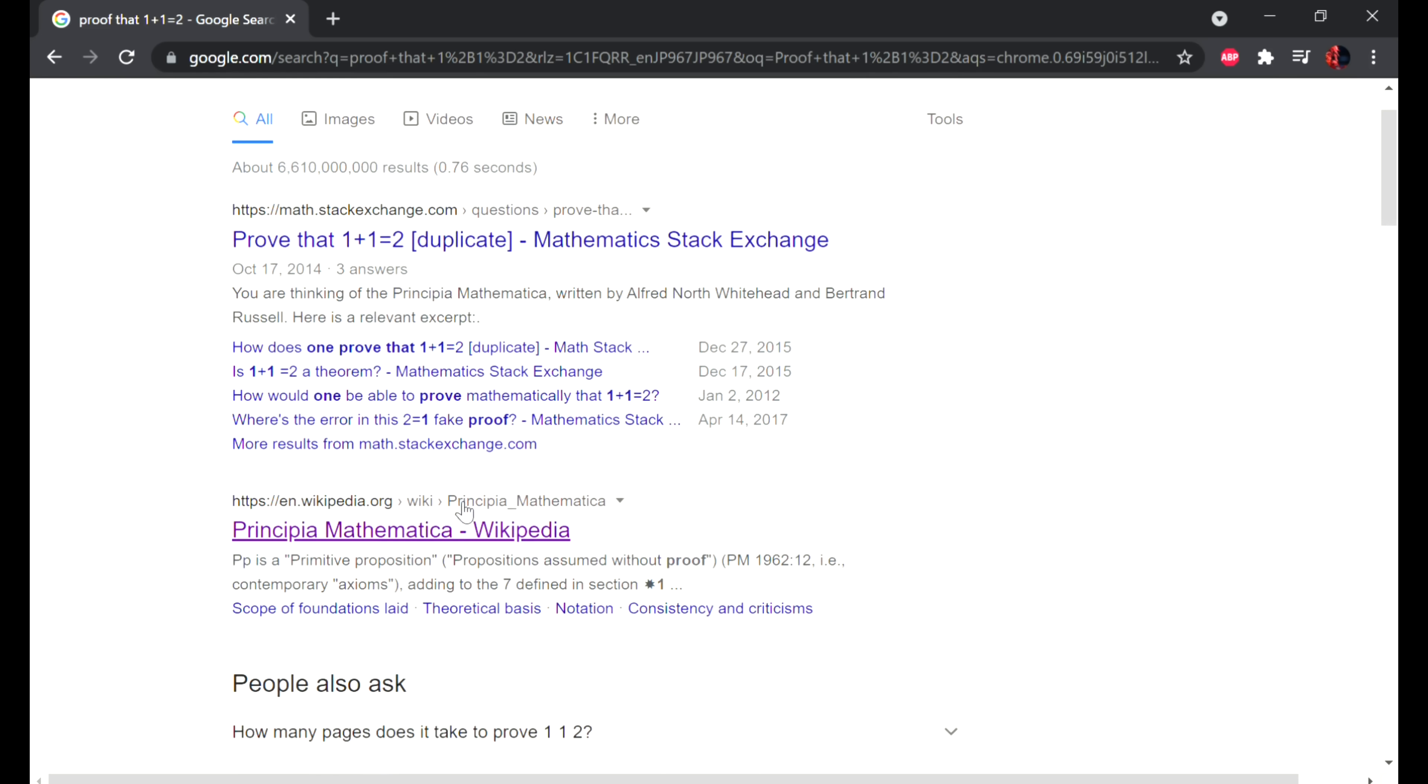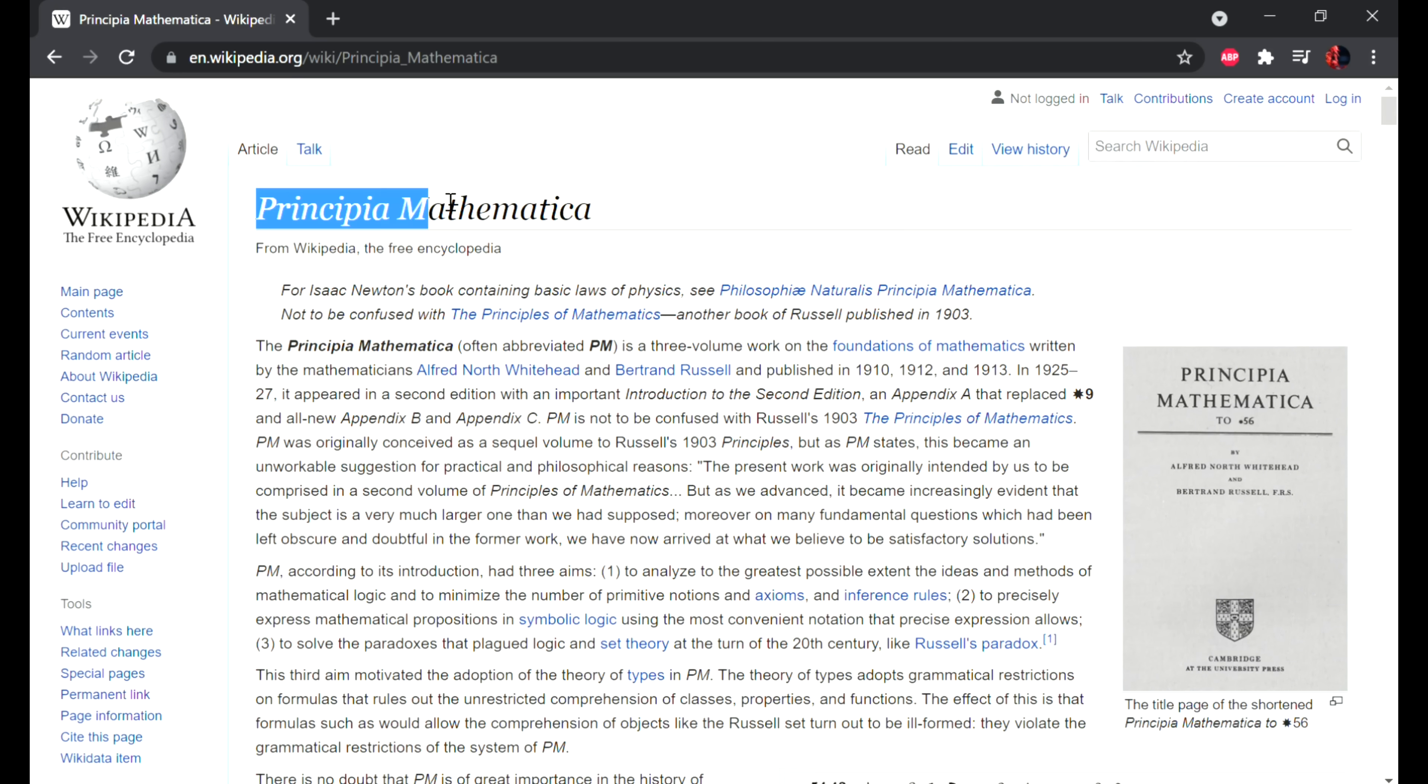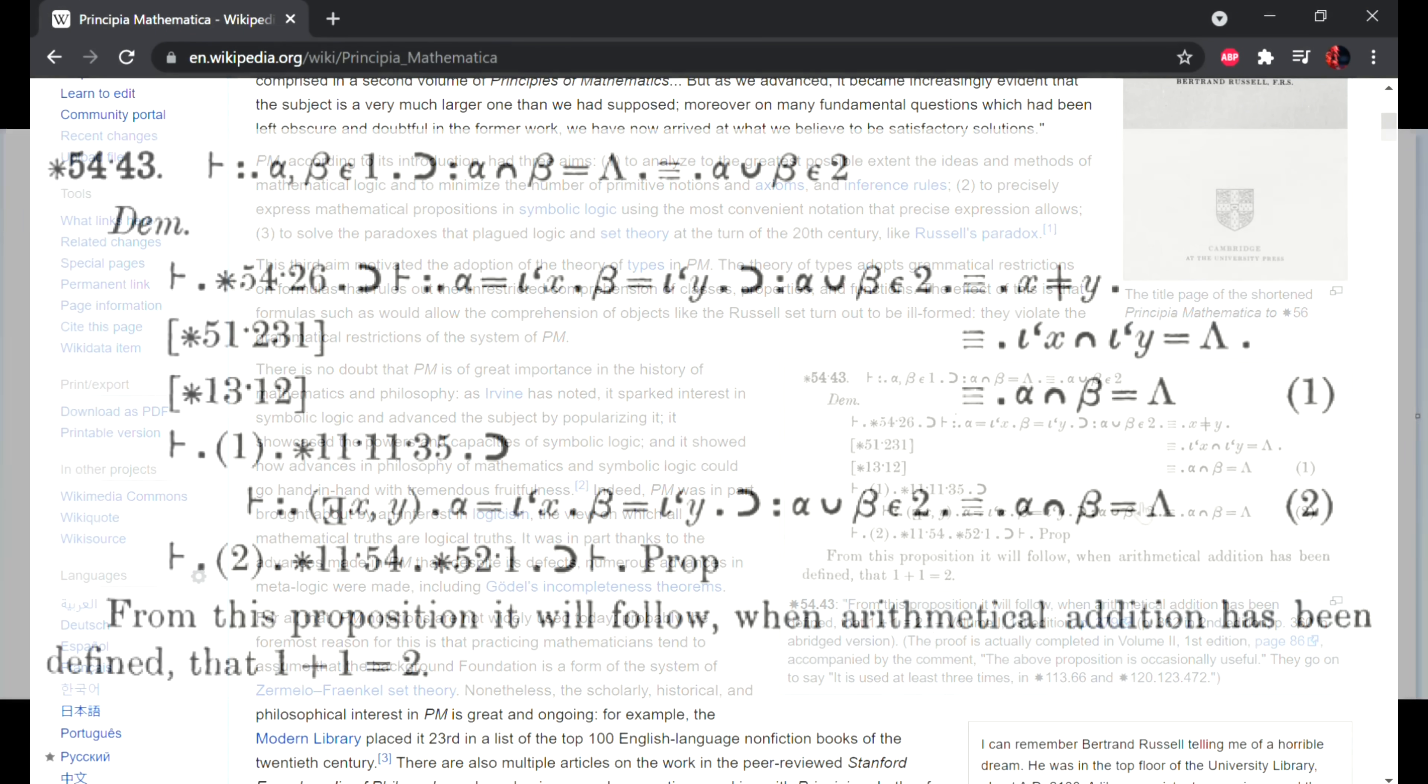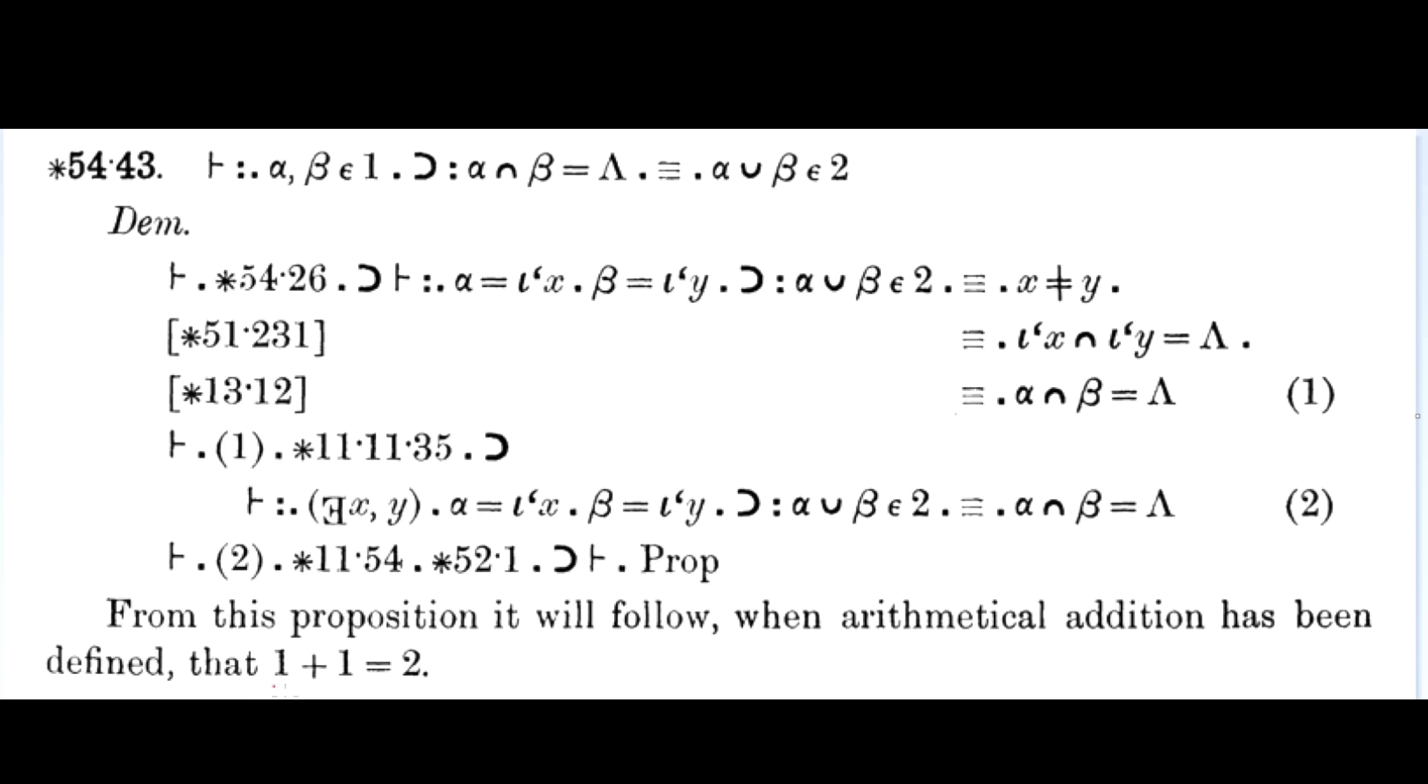If we search proof that 1 plus 1 equals 2 on Google, we get a direct excerpt from Principia Mathematica. But looking at this, we can't really tell what anything means here. Principia Mathematica is an encyclopedia defining the building blocks of math. In essence, what this writing is saying is, taking the ideas that we defined previously, we can show that 1 plus 1 is 2. But in all honesty, looking at this won't really give you an idea of why 1 plus 1 is 2.